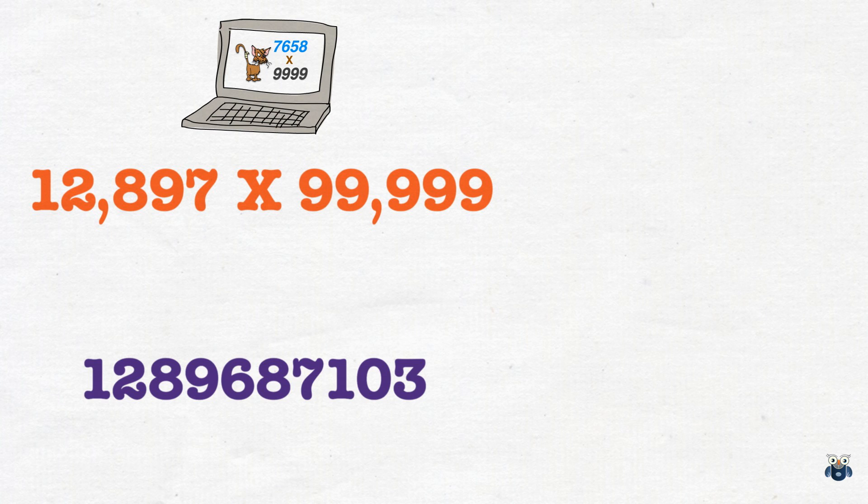Let's use our shiny new method to verify the answer, shall we? Okay, let's take 12,897 first. Let's add the digits. 1 plus 2 is 3. 3 plus 8 is 11.